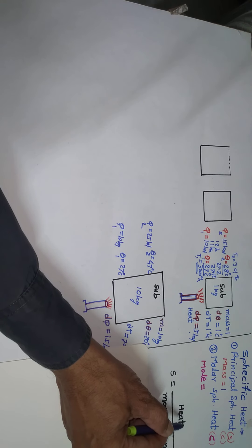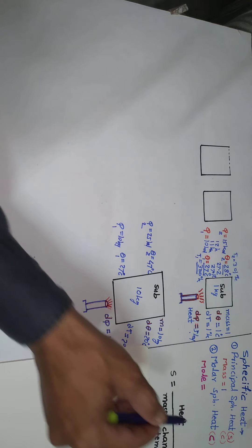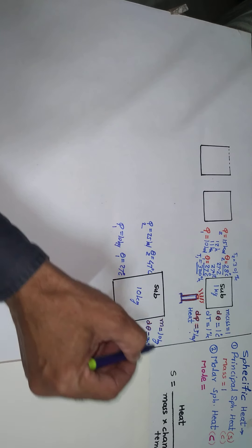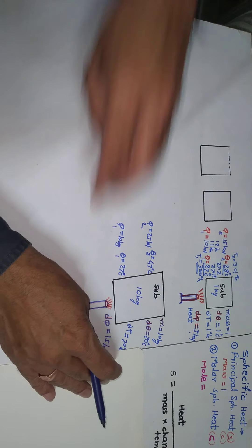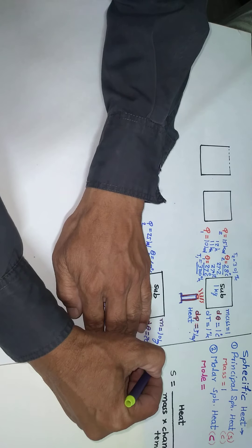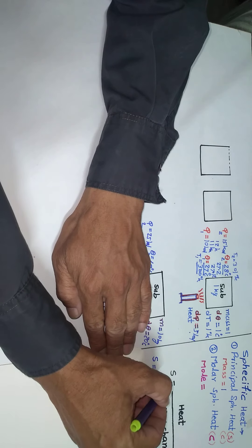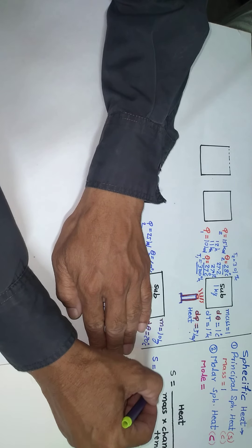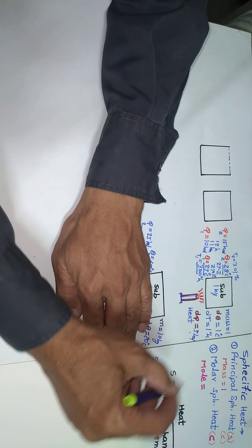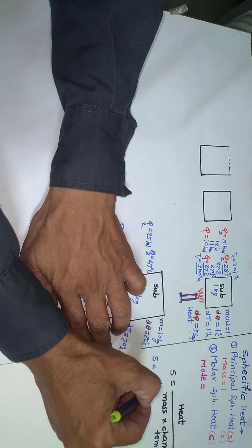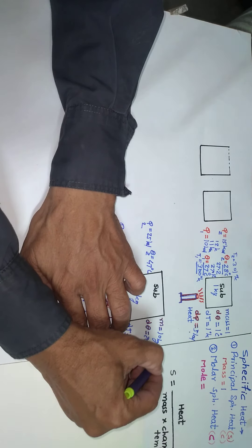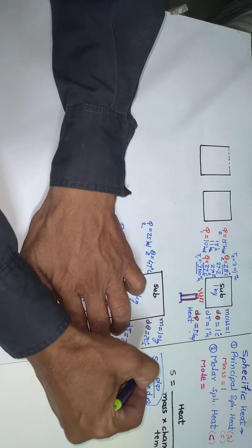The formula for principal specific heat is: S = DQ / (M × Dθ), where DQ is the amount of heat supplied, M is the mass of the substance, and Dθ is the change in temperature. If the mass is not 1 kilogram, you can still determine specific heat using this expression. This is what we call principal specific heat.